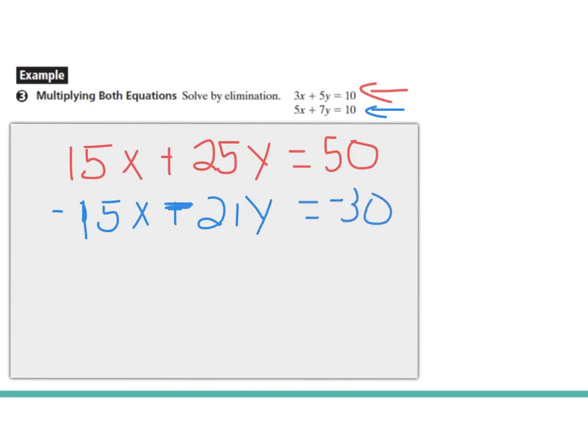And so now I'm going to use elimination by combining my columns. 15x minus 15x is 0. 25y minus 21y is 4y. And then 50 minus 30 is 20. So now I can divide both sides by 4, and I get y equals 5. Awesome.